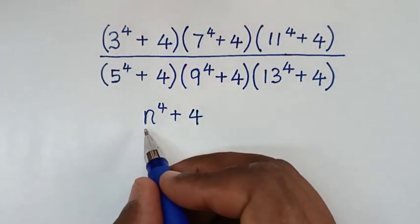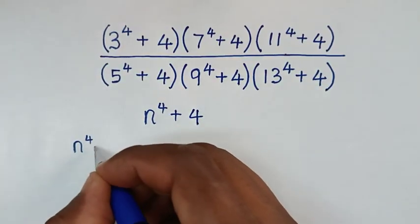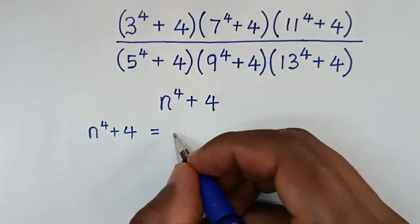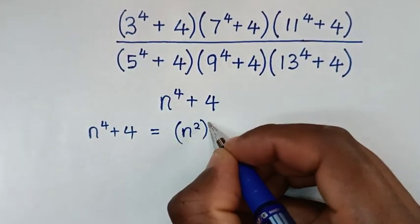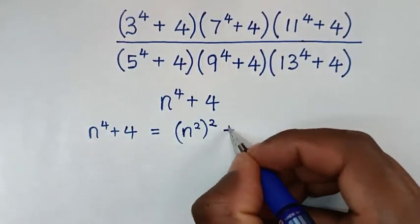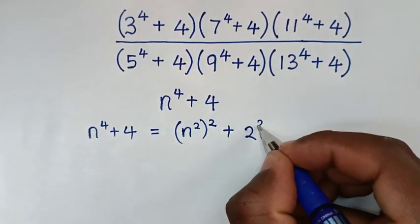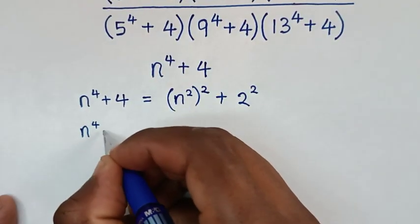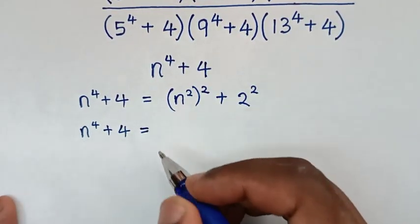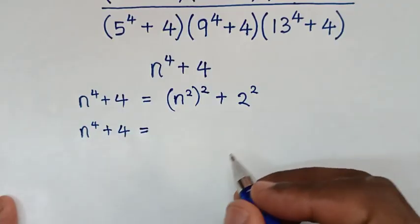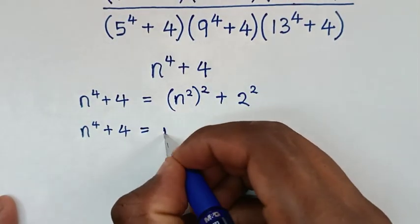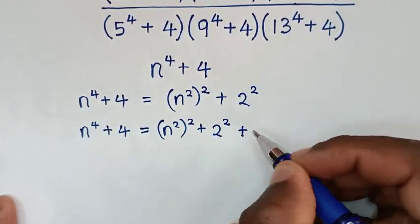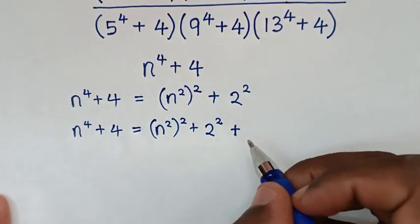Now from here, n power 4 plus 4 is equal to n power 4, which is n squared, then bracket squared, plus 4, which is the same as 2 squared. We will make this into quadratic form, so it will be n squared bracket squared plus 2 squared, then we add a middle term to complete the quadratic form.